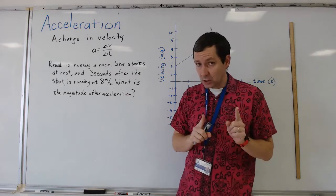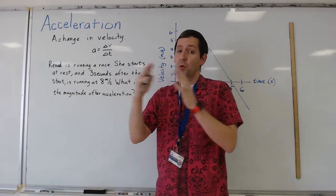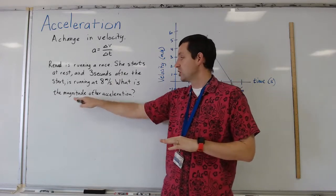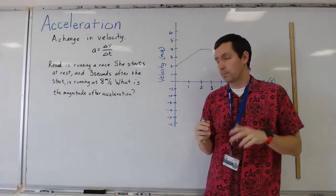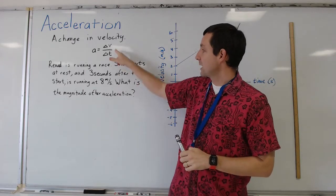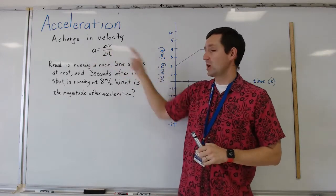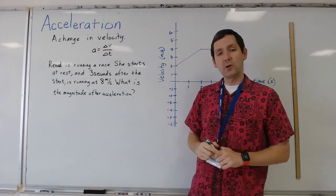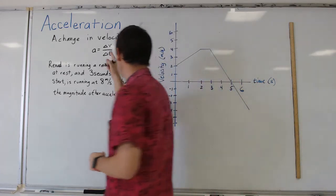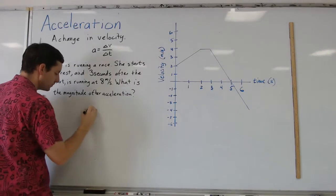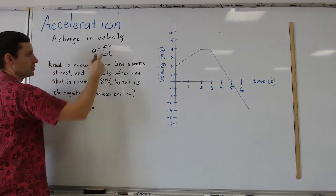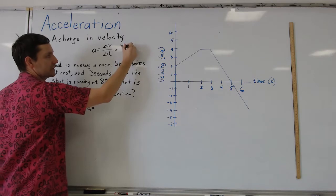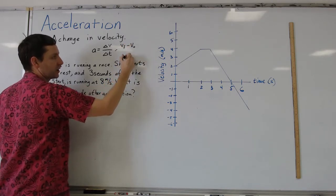Acceleration is a vector — we should normally have both magnitude and direction, but here it's just asking for the magnitude, the value. So we said earlier we can get acceleration by doing the change of velocity over change of time, and we can do that right here. We will do: acceleration equals...